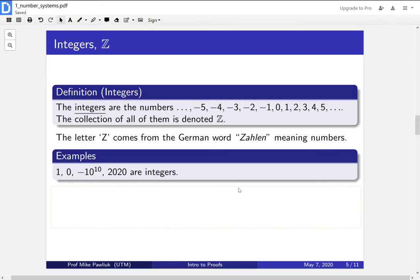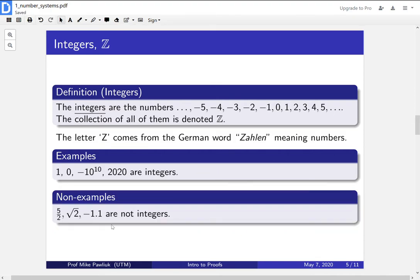Some examples of this, 1, 0, some large negative power of 10, some large power of 10 that is negative, and 2020. Some non-examples, 5 over 2 isn't an integer, root 2, and minus 1.1. Those are not integers.